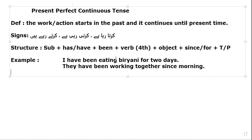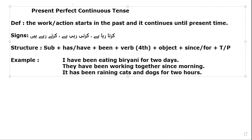Let's relate it to nature. 'It has been raining cats and dogs' — meaning very heavily — 'for two hours.' It has been raining cats and dogs for two hours. The rain started two hours earlier and the rain is still going on — it is still raining.